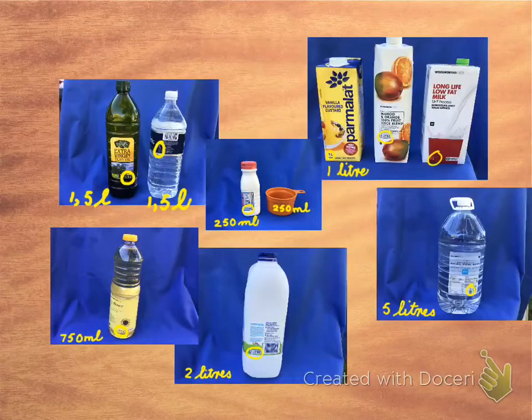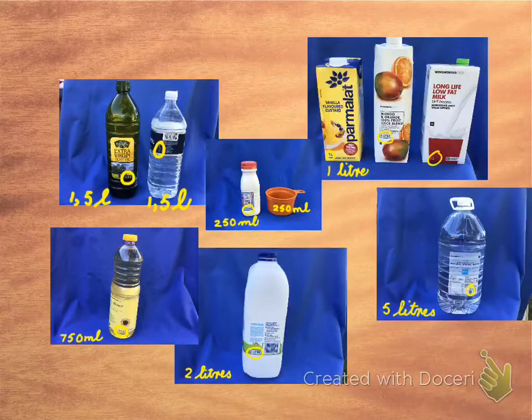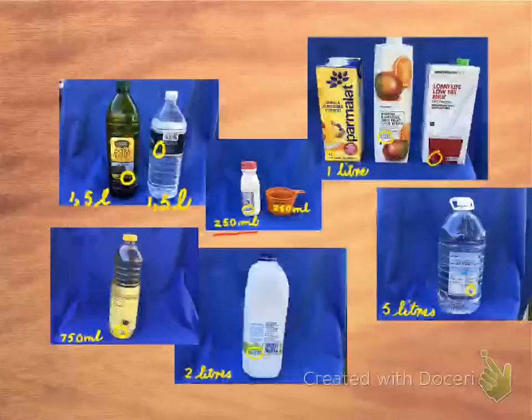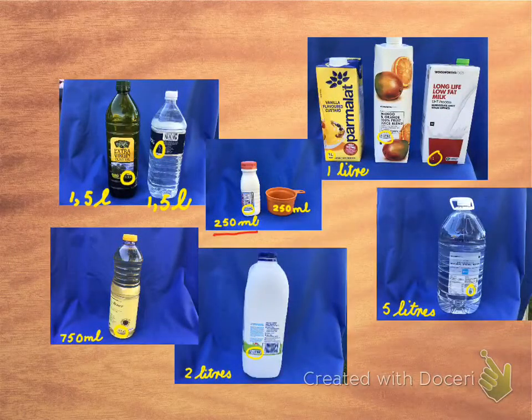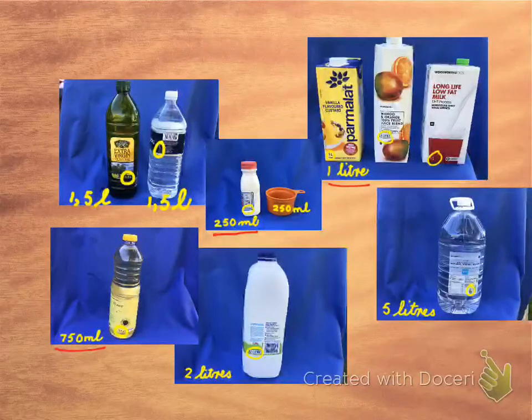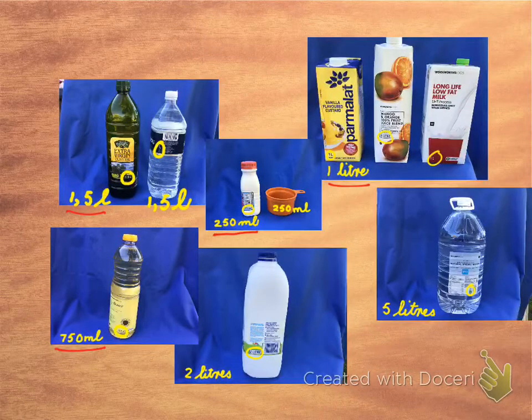Let us look at these. Around my home, I found all of these different amounts. We've got right from a small one like 250 milliliters, then we have 750 milliliters, one-liter containers, and here we have 1.5, which is one-and-a-half liters.